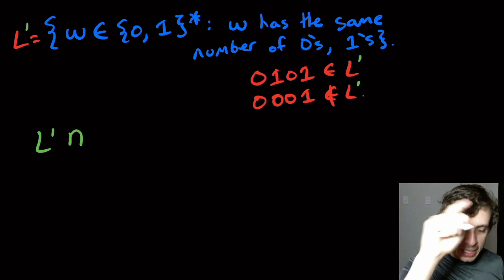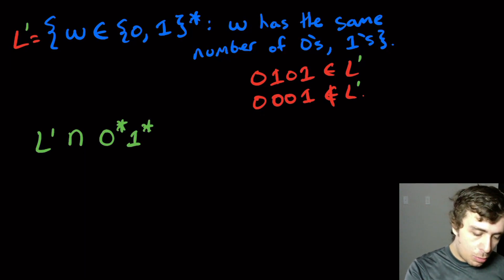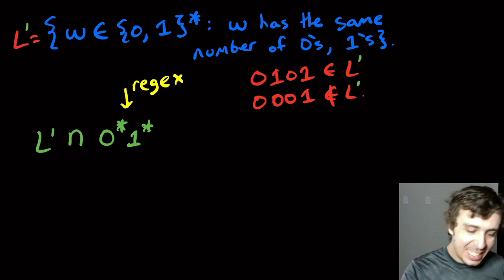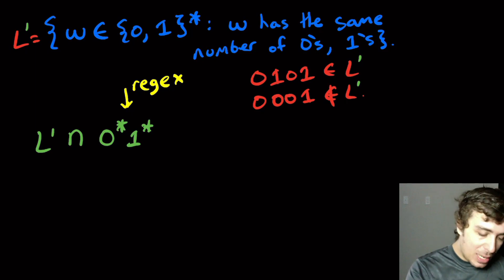And it turns out we can. So what I'm going to do is I'm going to intersect this language, this same number one right here, with the set 0* 1*. So we know that this thing right here is a regex because it is a regex. So if this thing is regular, so if L' is regular, then regular languages are closed under intersection, and so therefore this thing is regular.